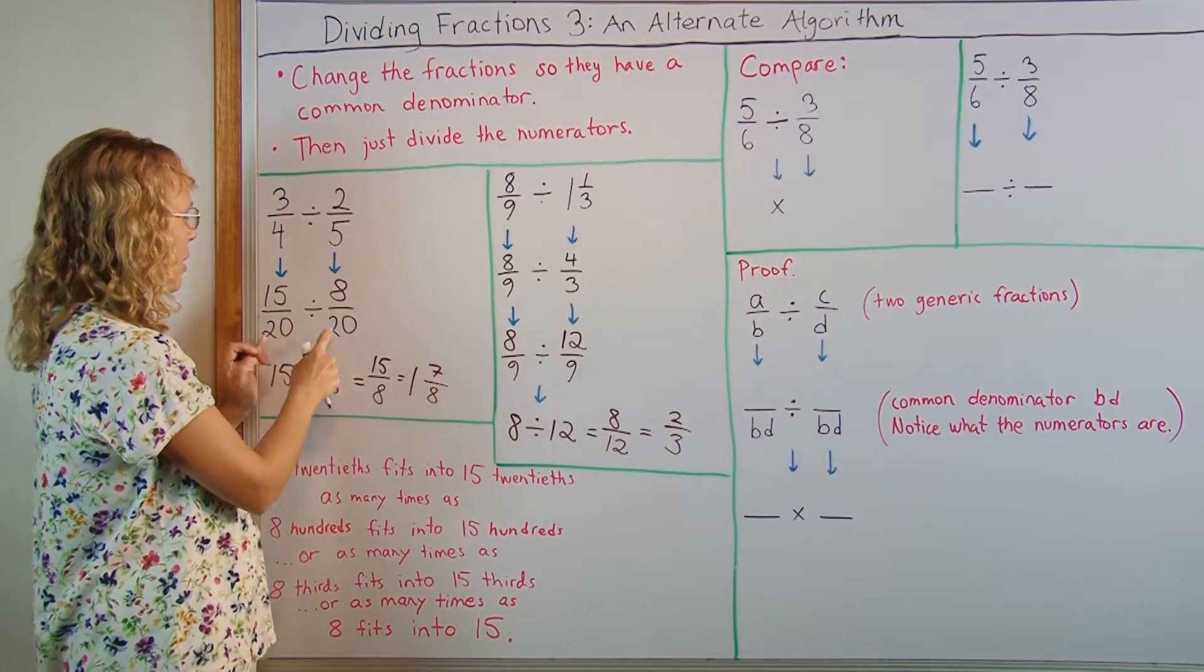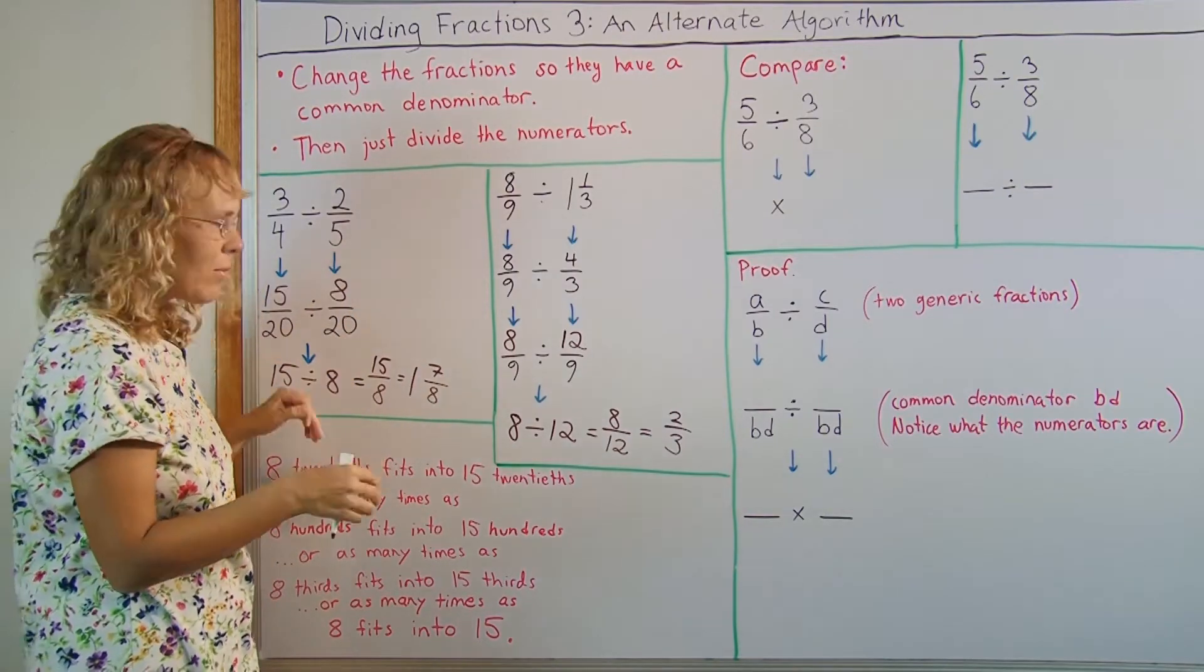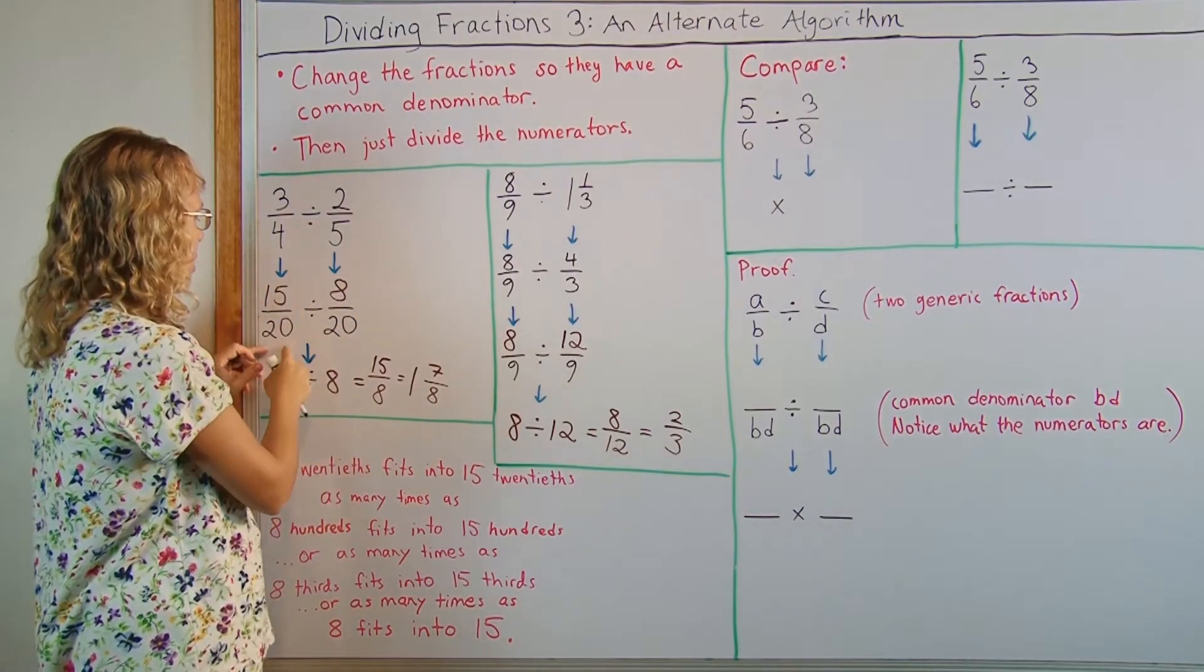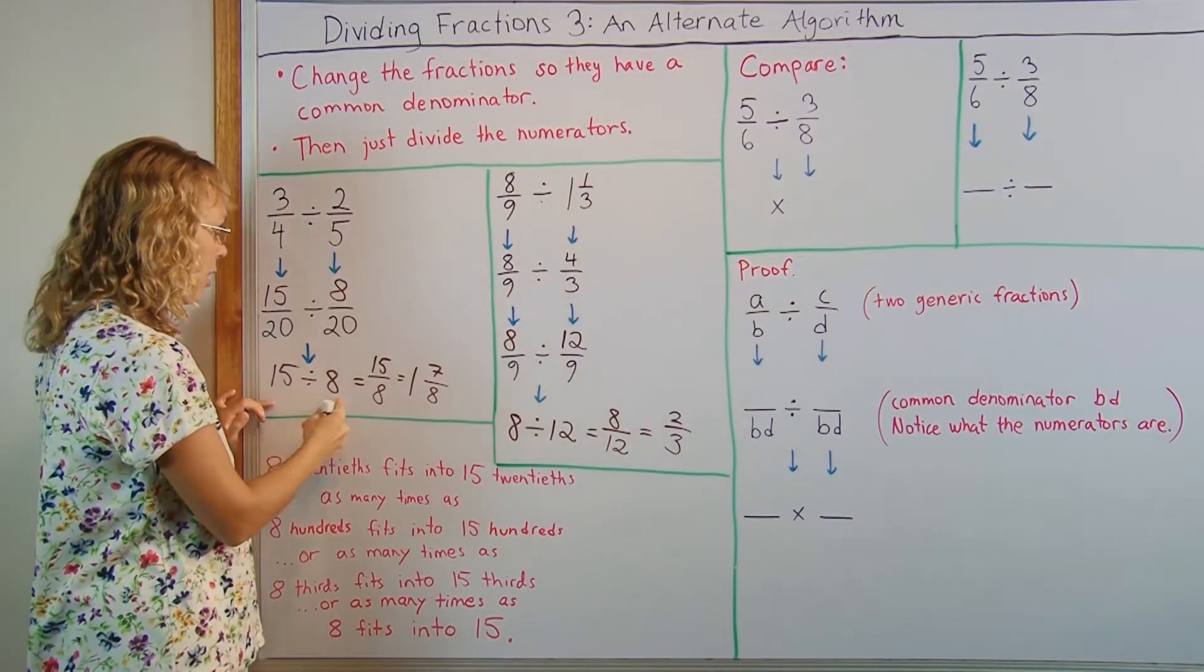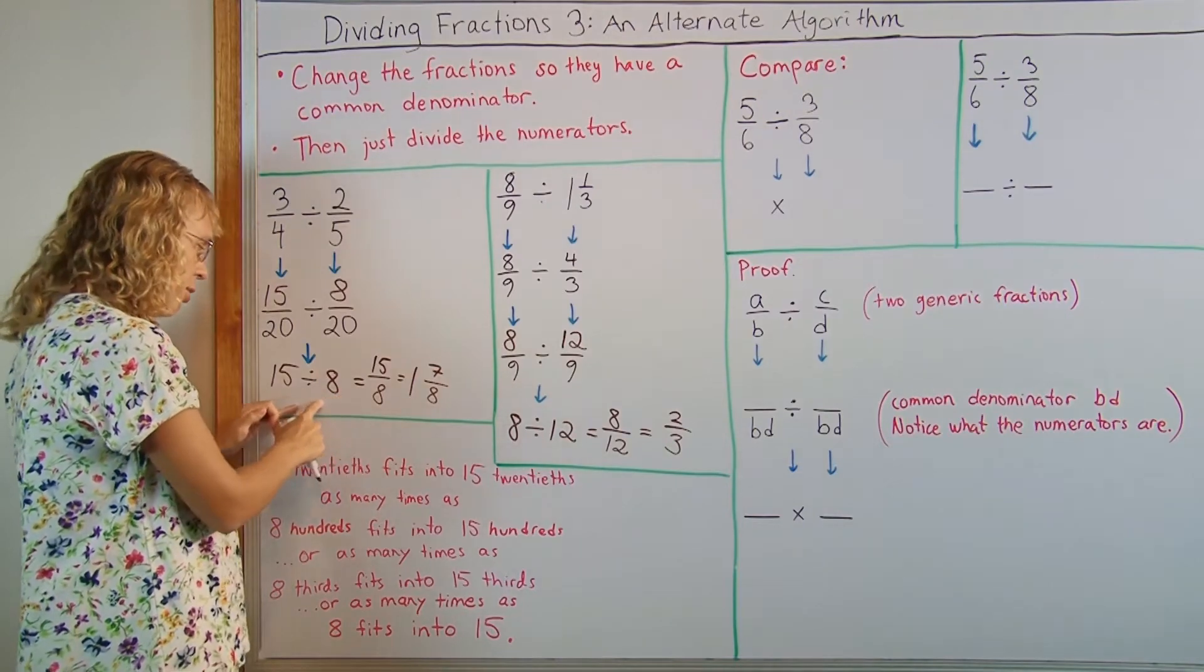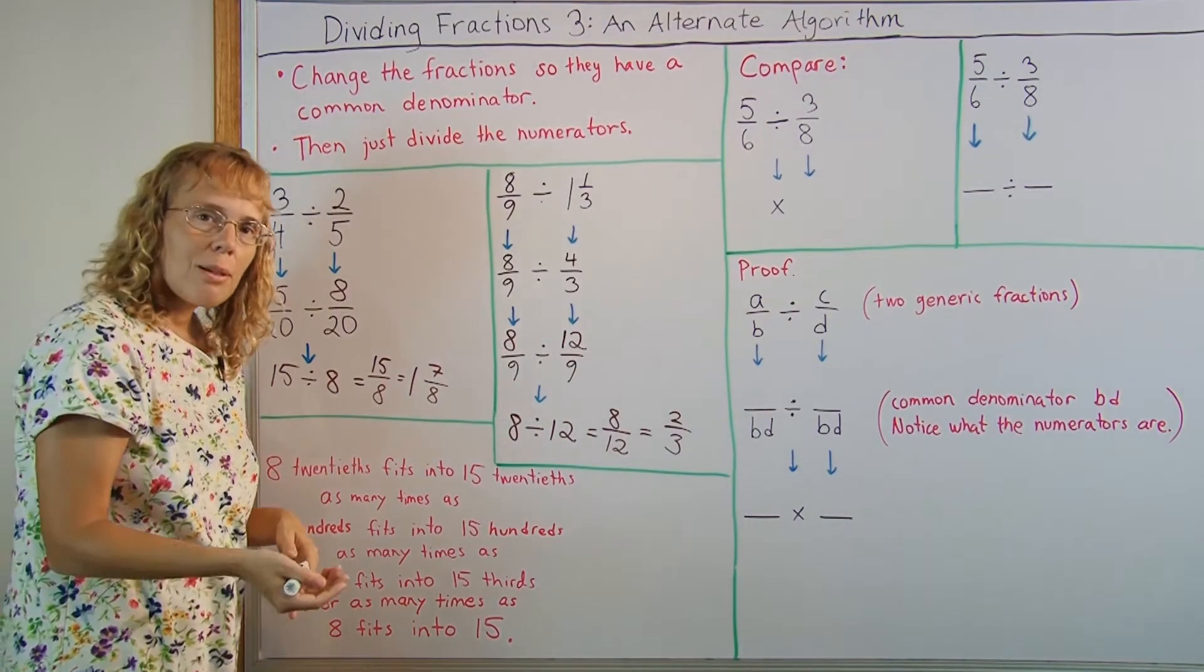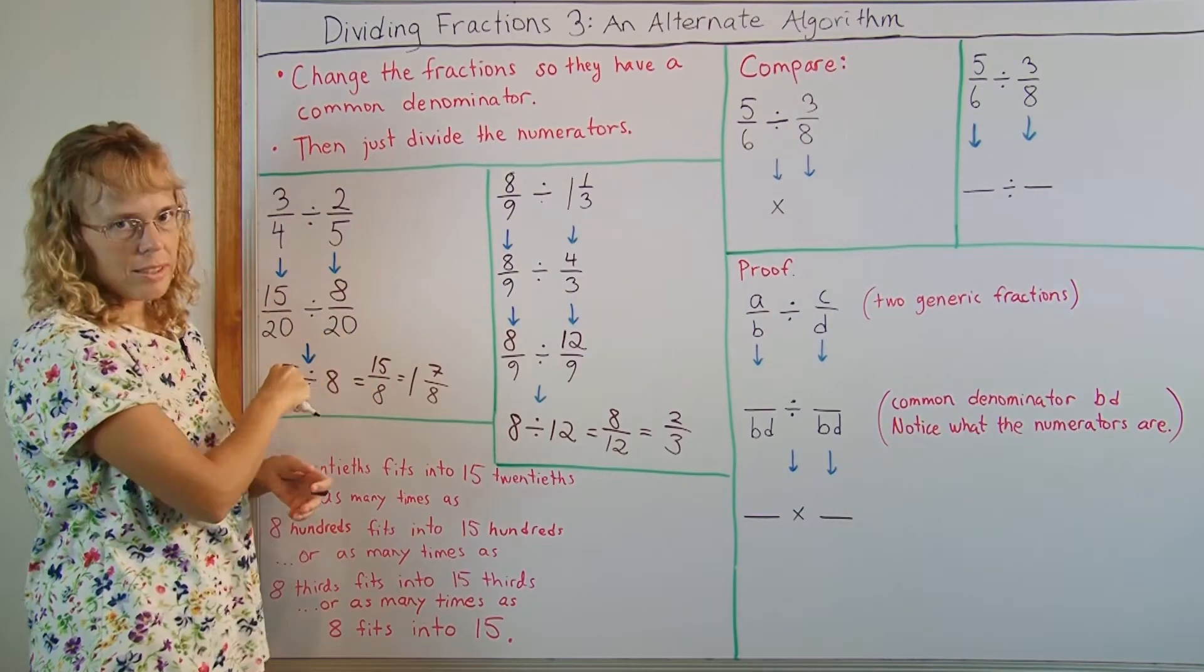Basically you could change this 20 to something like 15 thirds divided by 8 thirds. It would have the same answer as 15 20ths divided by 8 20ths. Or the same answer as 15 divided by 8. Because 8 fits into 15 as many times as 8 some kind of parts fits into 15 the same kind of parts.